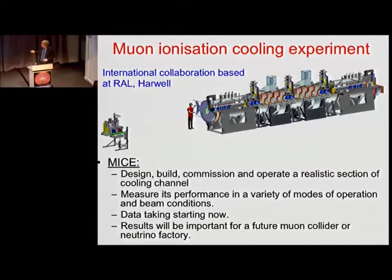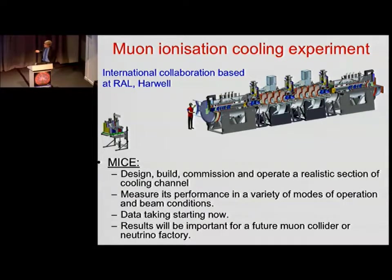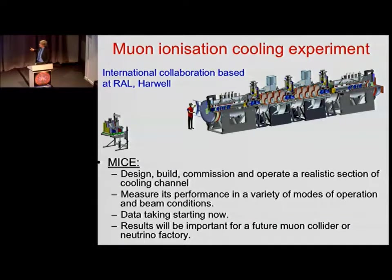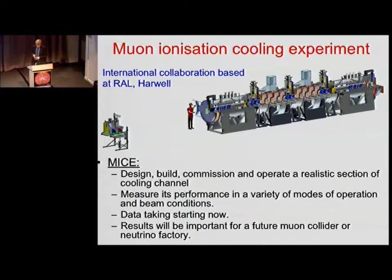MICE is now getting going — the opening was actually this week, with data taking starting at Rutherford Lab. The idea is to cool the muons down: you want cold, quality beams you can compress well. You slow them down and speed them up in one direction only, using radio frequency cavities and hydrogen devices to slow the beams. The technology is highly complex — the idea itself is quite simple, but getting it to work is extremely difficult, and this is at the frontier of technology.